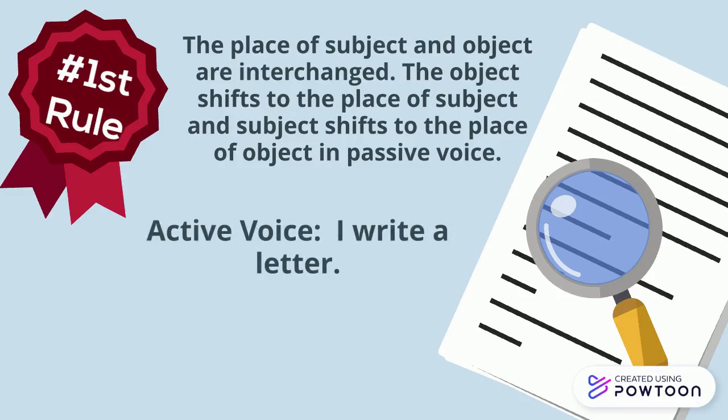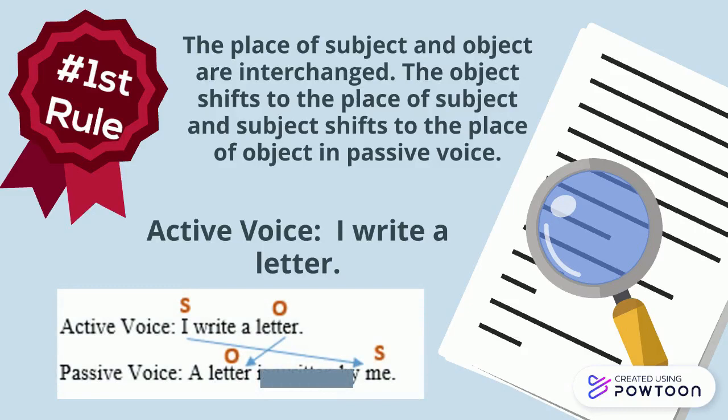I write a letter. The subject in the sentence is I, and the object is a letter. The only thing that we should do with the subject and object in the sentence is to interchange their placement. So the object, a letter, must be in the subject part, while the subject I must be placed in the object part of the active sentence.